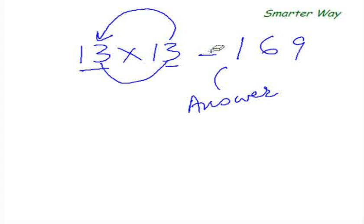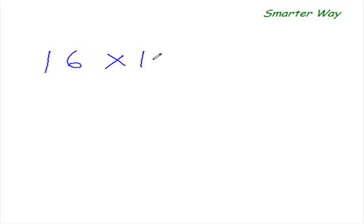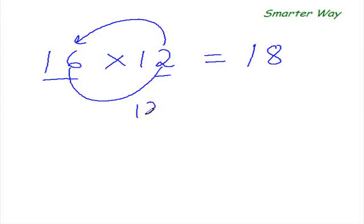Right. Okay, so let's take one more example and be careful this time because I'm going to set up a trap for you. What is, let's say, 16 times 12? So add this 2 to 16. 16 plus 2 is 18. Now 6 times 2 is 12. And you know that 12 is a 2-digit number, and there is only 1 place here to go. So carry forward 1, write 2 here. So the answer is 192.